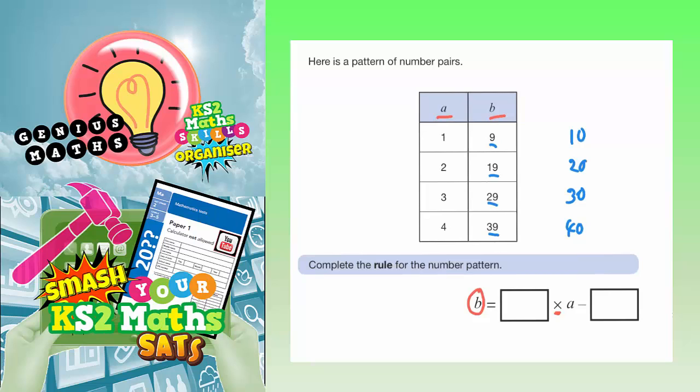So all we've got to do now is just think, well hang on a minute, to get from 1 to 10, you times by 10. To get from 2 to 20, you times by 10. To get from 3 to 30, you times by 10. To get from 4 to 40, you times by 10.